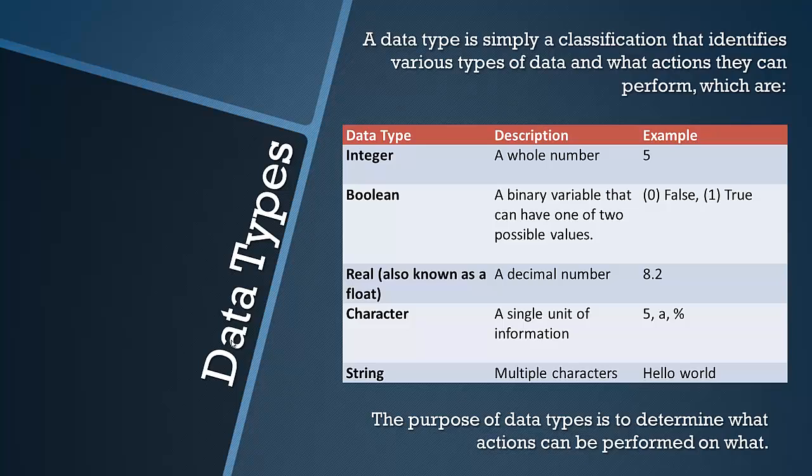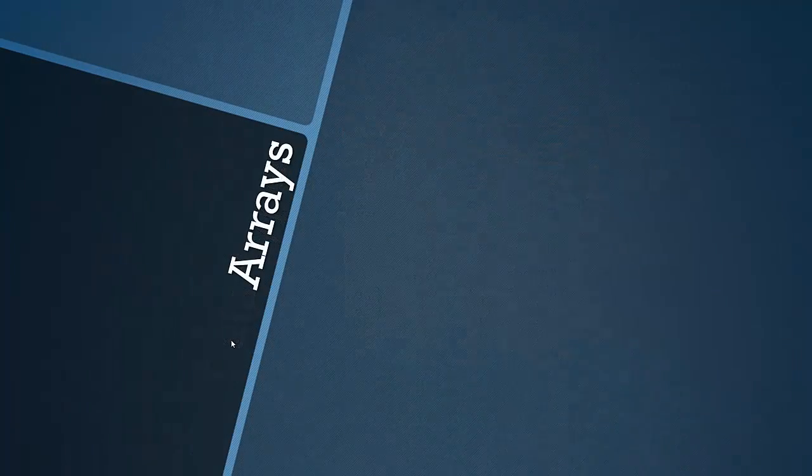An example of a real would be 8.2. A character is a single unit of information whether it's a number, letter or symbol. The way you would determine whether it's a character or an integer is whether it has quotation marks around it. A string is multiple characters, so hello world for an example. The purpose of data types is to classify what actions can be performed. For example, if you have a letter A you can't multiply that letter by C. Data types determine what certain functions can do.